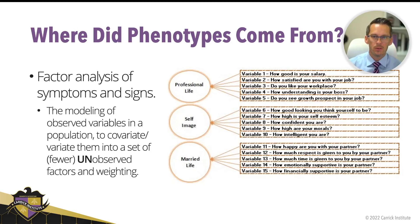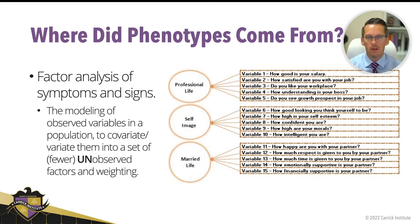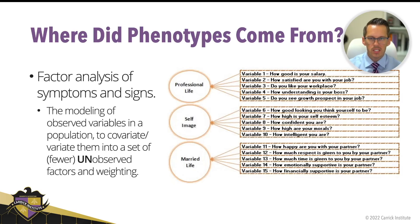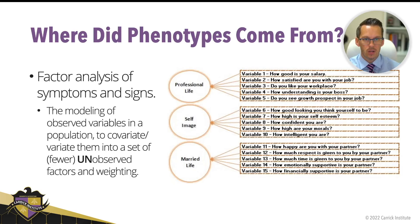So where do these phenotypes come from? They come from a factor analysis of symptoms and signs. Factor analysis is the modeling of observed variables in a population to covariate them into a set of fewer unobserved factors and weighting. So when we start looking at somebody's symptom presentation, it might be hard to say here are these clusters of symptoms. We don't really recognize that until we take all of those symptoms and covariate them with things like vestibular testing or visual testing, and then we can start saying these symptoms represent vestibular dysfunction or visual dysfunction.